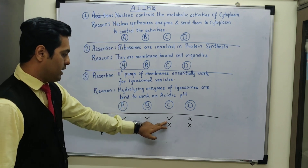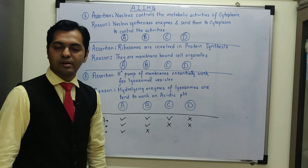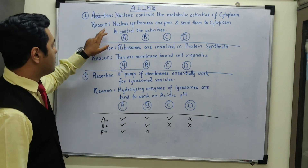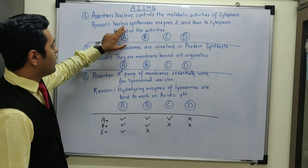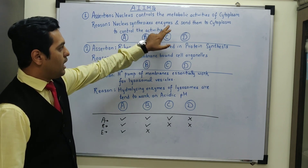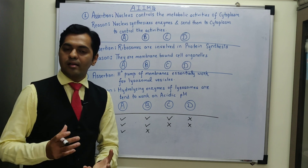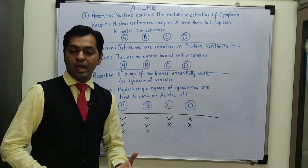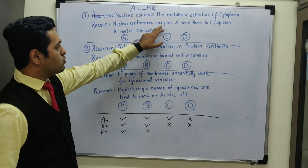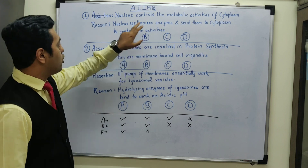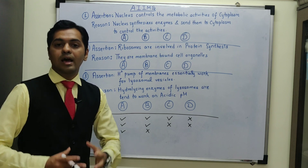Since the assertion statement is correct, options A, B, or C are possible — option D is definitely ruled out. Now let us understand whether the reason statement is correct. The reason states that nucleus synthesizes enzymes and sends them to cytoplasm. Understand that enzymes are chemically proteins in nature and proteins are synthesized by ribosomes, so it is the ribosomes that synthesize the enzymes.